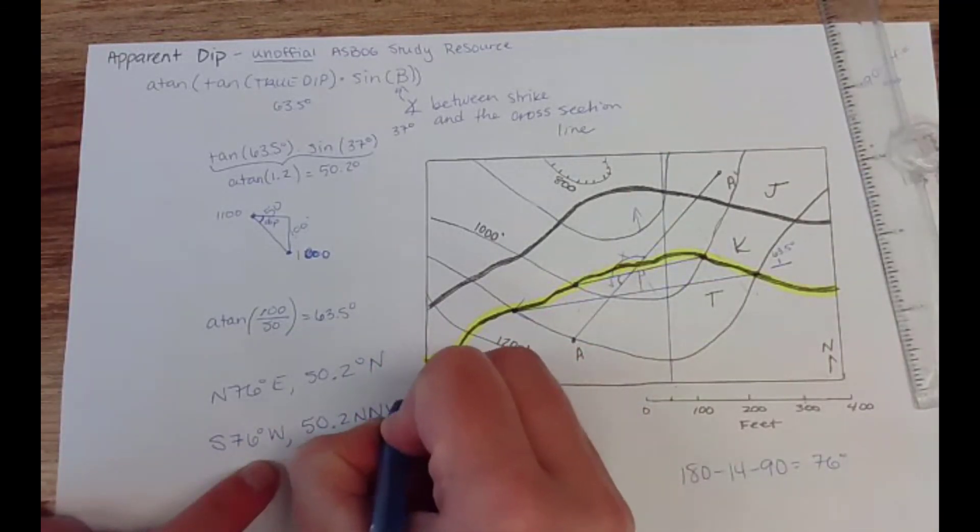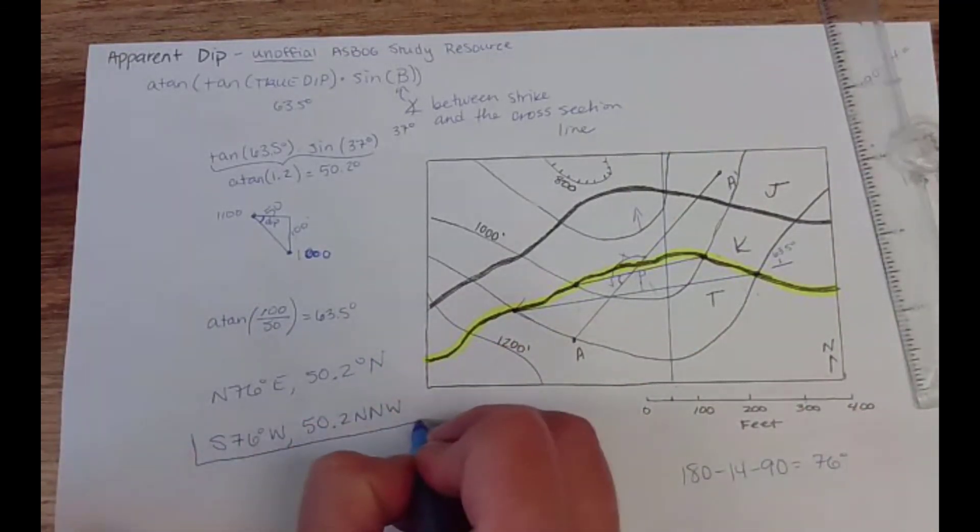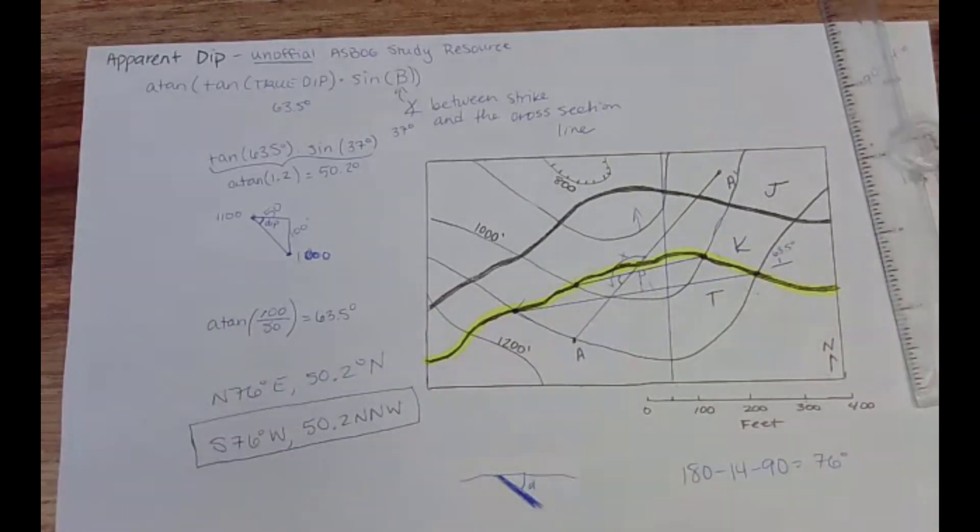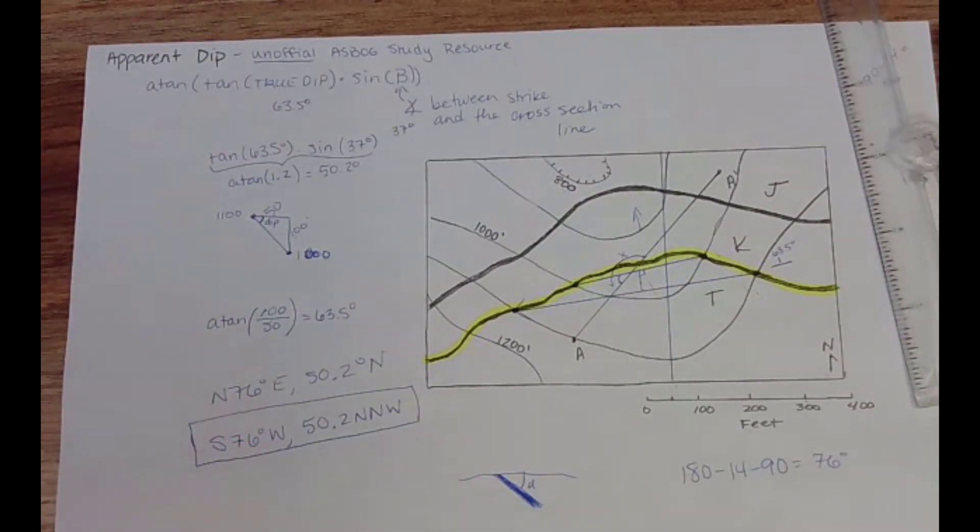South 76 west, 50.2 north, and it's a bit north northwest. So that would be the full attitude of that bed. Anytime someone says attitude what they really just mean is strike and dip or some equivalent phrasing like dip direction or quadrant notation or azimuth. This is written in quadrant. Hope that helps you understand a little bit about apparent dip.